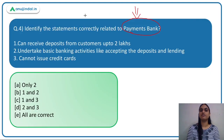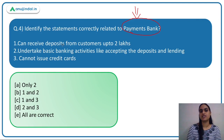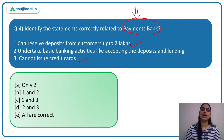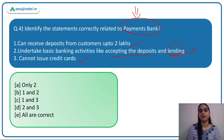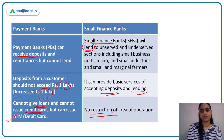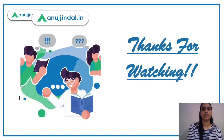Coming back to the fourth question: payments banks can receive deposits up to two lakh — this is correct. They cannot issue credit cards — this is also correct. But they can undertake banking activities like accepting deposits AND lending — this is incorrect, as they cannot lend. So statements one and three are correct, making the answer option C. That was all for today's session — thank you so much.